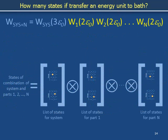We begin our example by listing the ways that the world can be configured with the system at energy 3ε₀ and with each of the n parts of the bath at energy 2ε₀. For simplicity, the parts of the bath are the same — not necessarily always having the same state, but having the same spectrum of states.